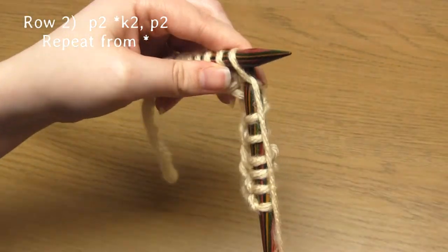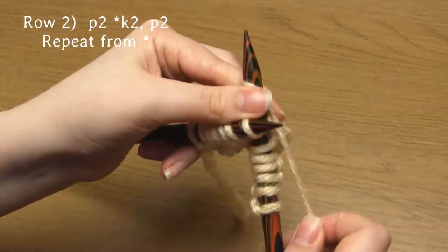Then just repeat knit two, purl two, over and over until the end of the row.